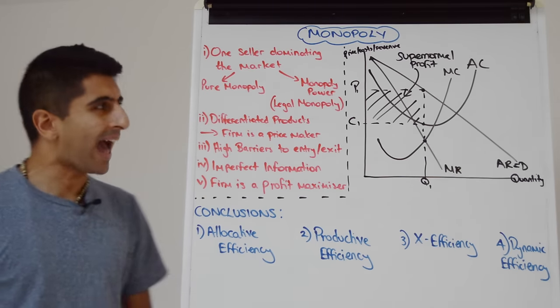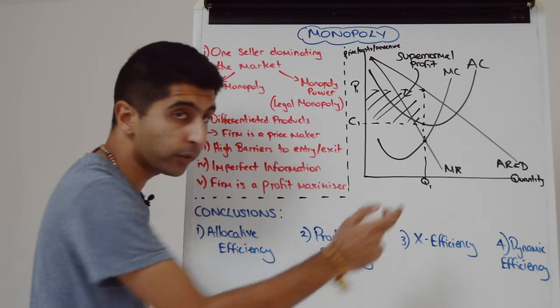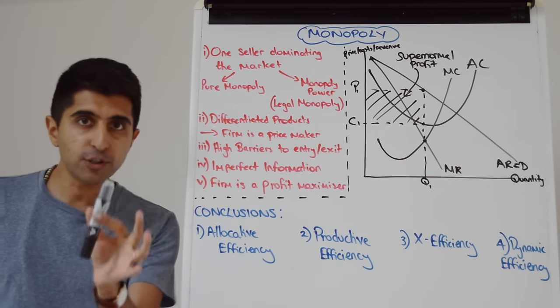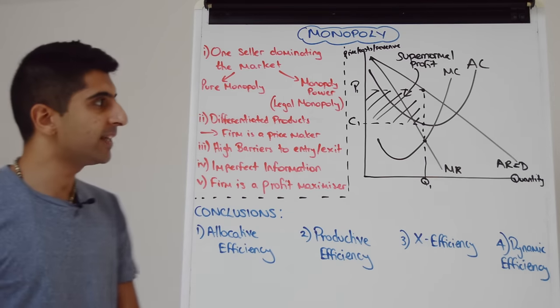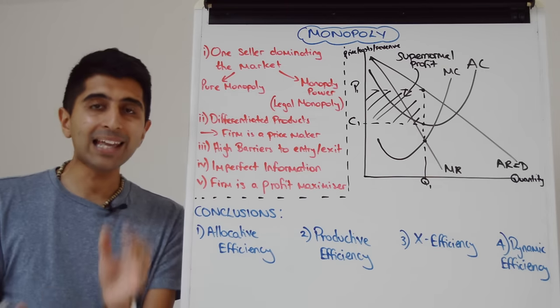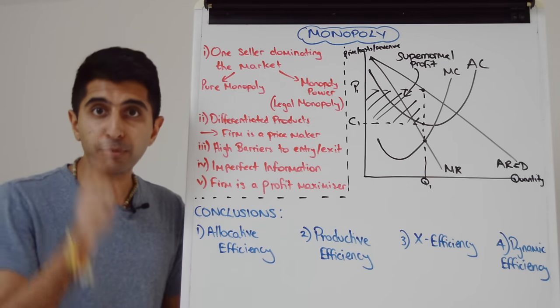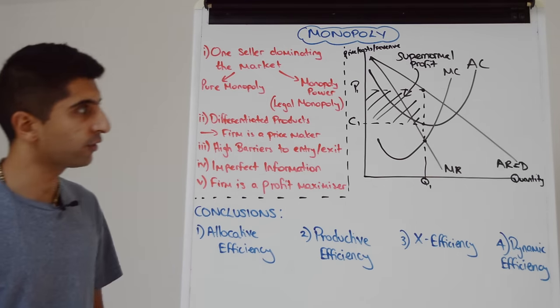So let's have a look here. Is this monopolist allocatively efficient? Well, we have to look at quantity Q1, but the quantity they're producing, are they being allocatively efficient? Well, remember, allocative efficiency occurs where price is equal to marginal cost.